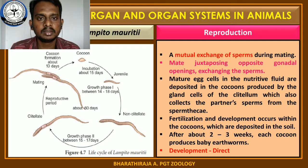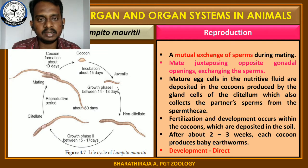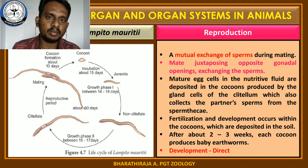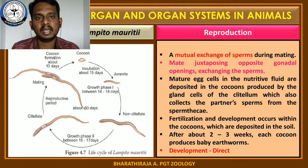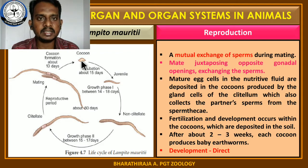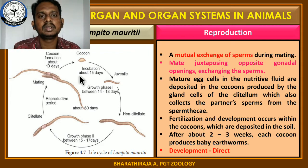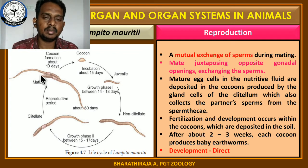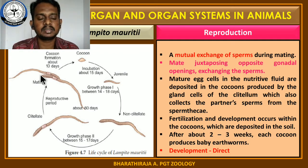During the movement of the cocoon, it collects the sperm from the spermathecal opening. As a result, the cocoon now contains matured eggs and matured sperms. The fertilization takes place within the cocoon, not within the worm's body. So the fertilization is external.